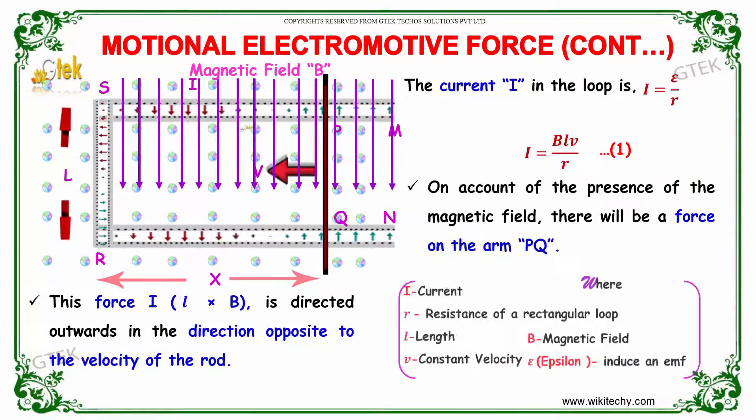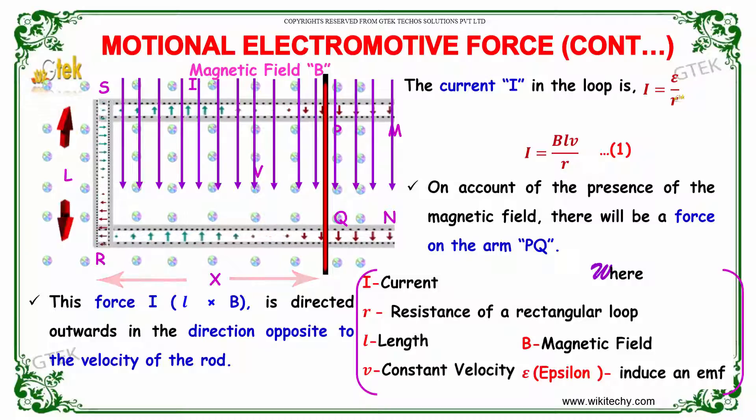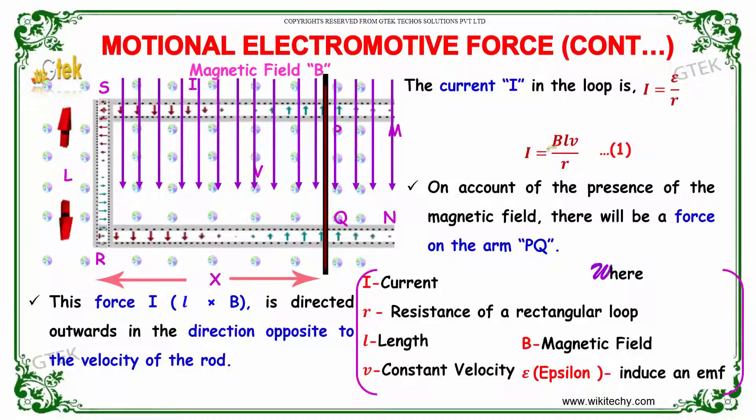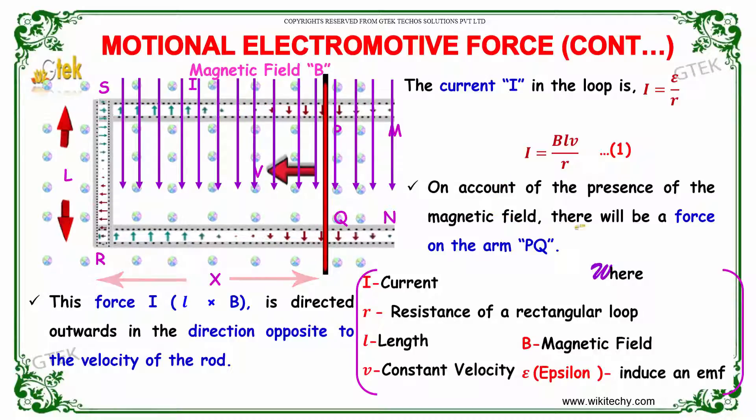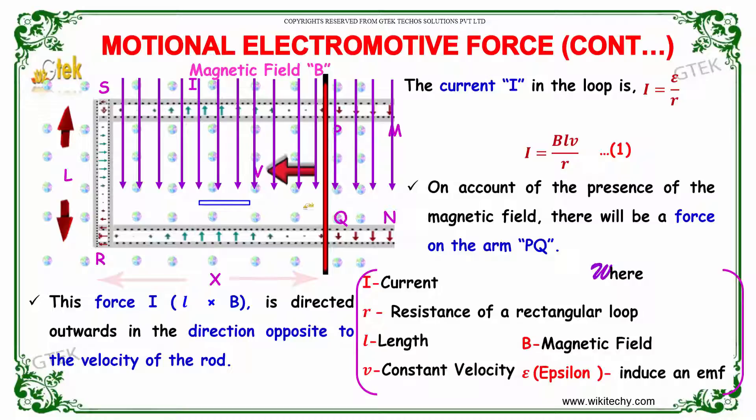The current I in the loop is given by I equals epsilon divided by R. As you know, epsilon equals B into LV, so I equals B into LV divided by R. On account of the presence of the magnetic field, there will be a force on the arm PQ. This force I into L into B is directed outwards in the direction opposite to the velocity of the rod.